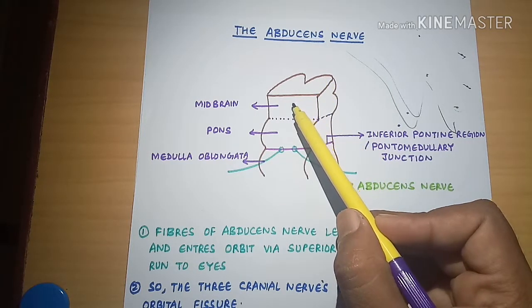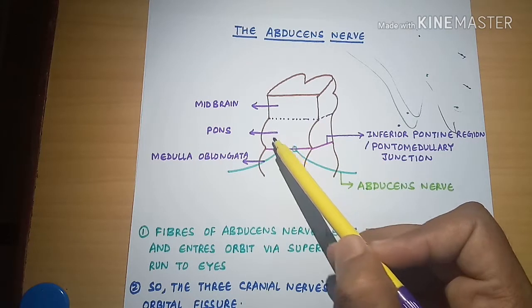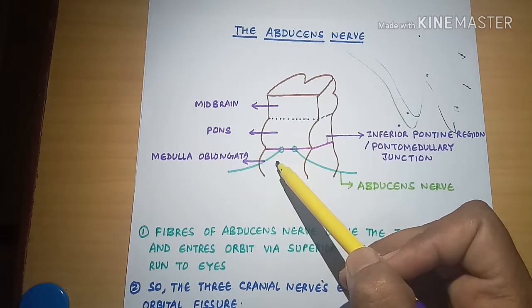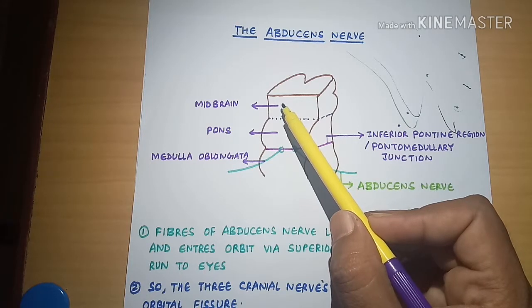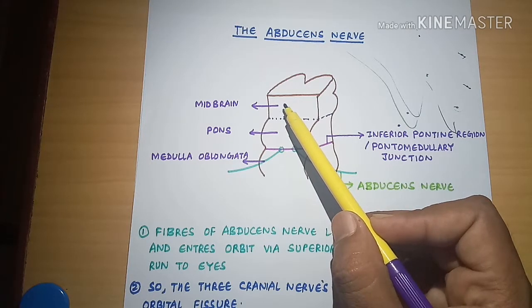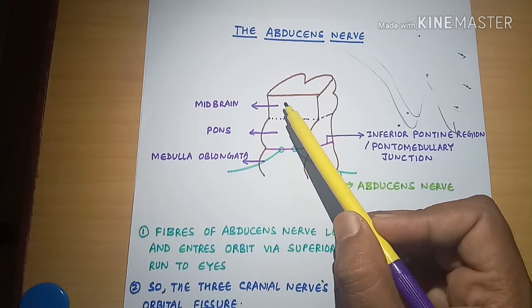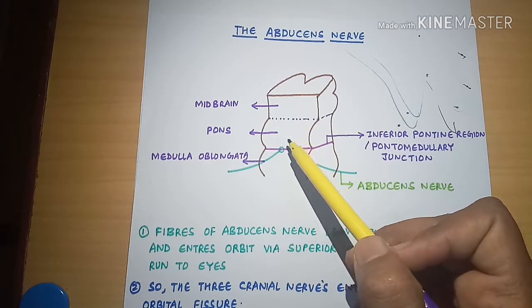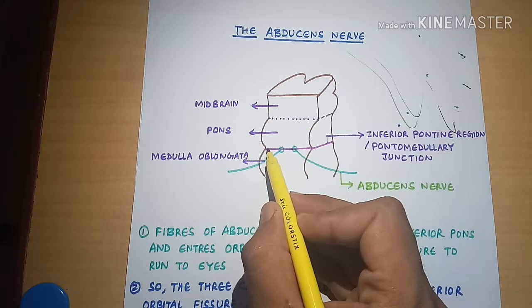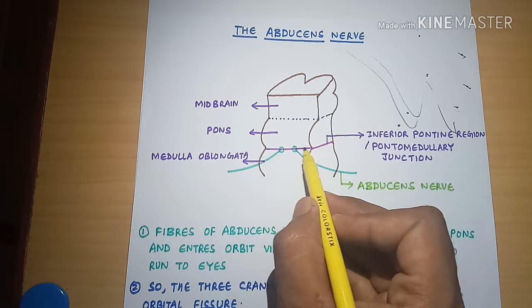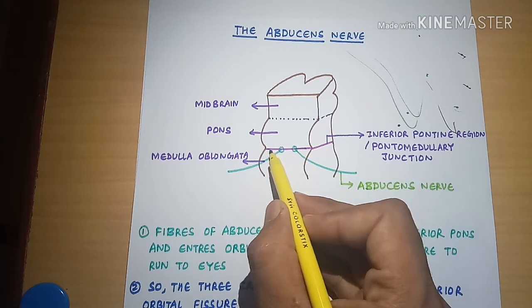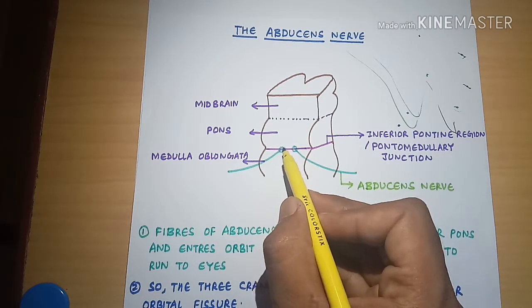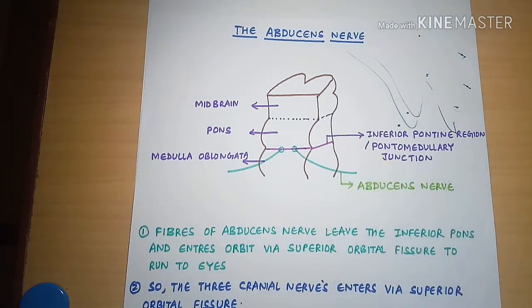I have drawn a brainstem here. This region of the brainstem is called the midbrain, this is the pons, and this is the medulla oblongata. From the midbrain, the two cranial nerves — the oculomotor nerve and the trochlear nerve — will arise.